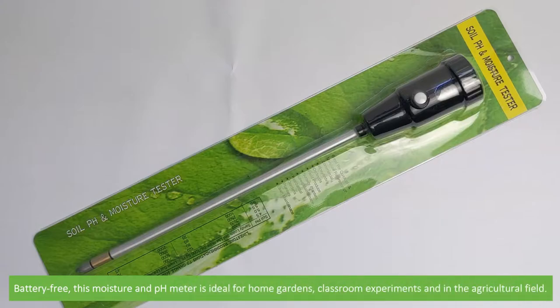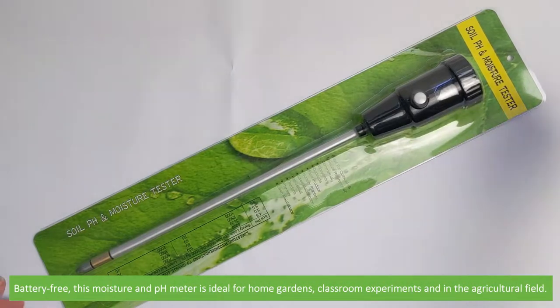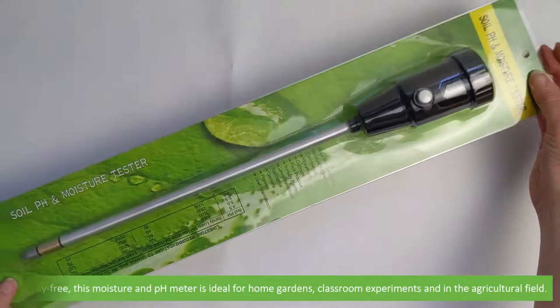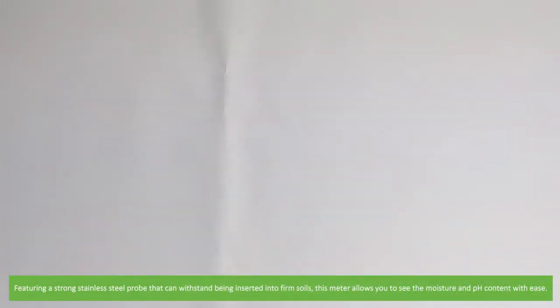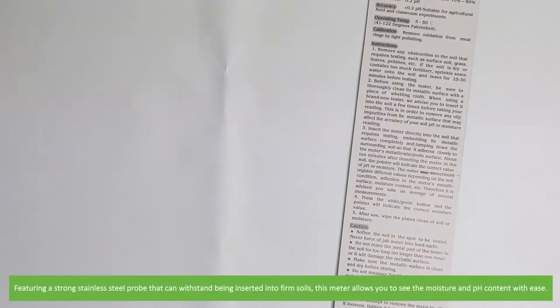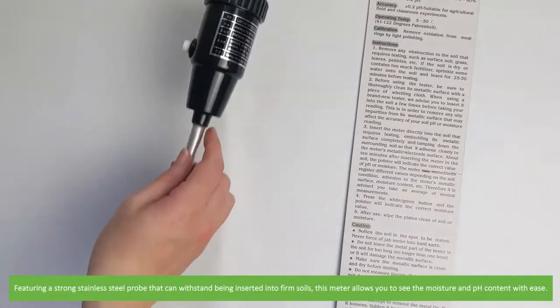Battery free, this moisture and pH meter is ideal for home gardens, classroom experiments and in the agricultural field. Featuring a strong stainless steel probe that can withstand being inserted into firm soils, this meter allows you to see the moisture and pH content of soil with ease.